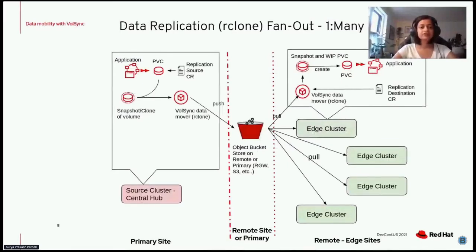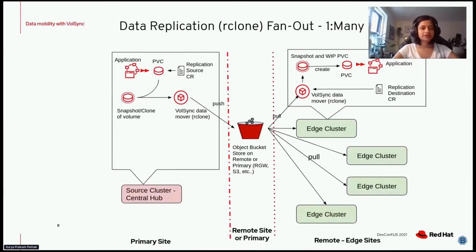Now let's discuss another use case of VolSync: high fan-out one-to-many data replication. You can use VolSync to distribute data from a primary or central hub to many edge sites. You deploy the VolSync operator on both clusters. When you deploy the replication source CR on the primary site, the operator picks it up and initiates data distribution — it first creates a point-in-time snapshot of the source PVC and uses a temporary volume to move that data. The VolSync operator launches a job using the RClone data mover to copy the source data from the temporary volume to an intermediate storage unit like an object bucket.